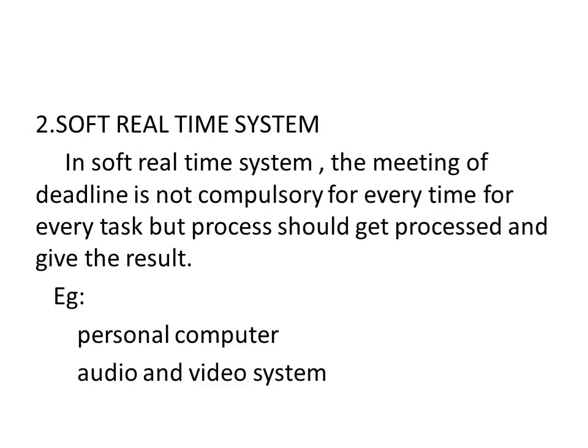The second type is the soft real-time system. In a soft real-time system, meeting the deadline is not compulsory for every task every time, but the process should still be completed and give a result — it may take some time or have a time delay, but the process must be completed.